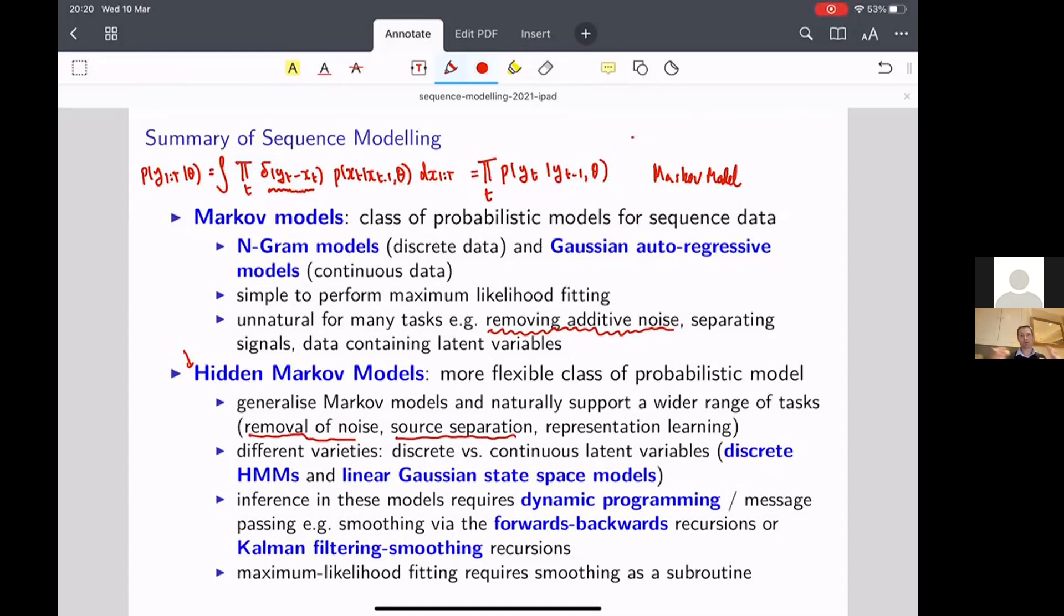just like the N-gram models are intimately related to Gaussian autoregressive models. The discrete HMM have all the same types of things that are in linear Gaussian state space models up to some edge cases to do with the different properties of Gaussians versus discrete random variables.